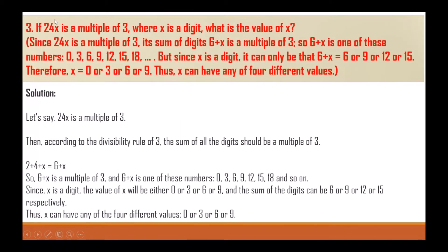Question 3: If 24x is a multiple of 3, where x is a digit, what is the value of x? Since 24x is a multiple of 3, its sum of digits 6 + x is a multiple of 3. So 6 + x is one of these numbers: 0, 3, 6, 9, 12, 15, 18. Since x is a digit, 6 + x can equal 6, 9, 12, or 15.